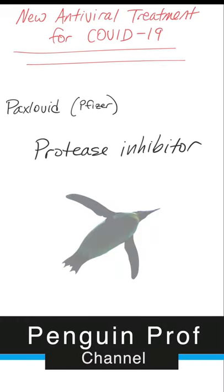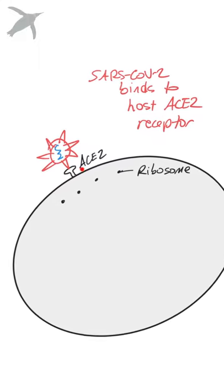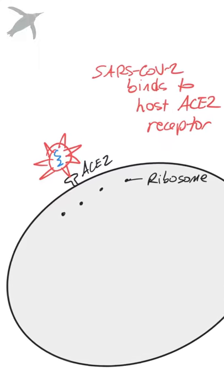Let's talk about how the new Paxlovid drug for COVID-19 works. Here's SARS-CoV-2 with its messenger RNA inside, bound to the ACE2 receptor of the host cell.